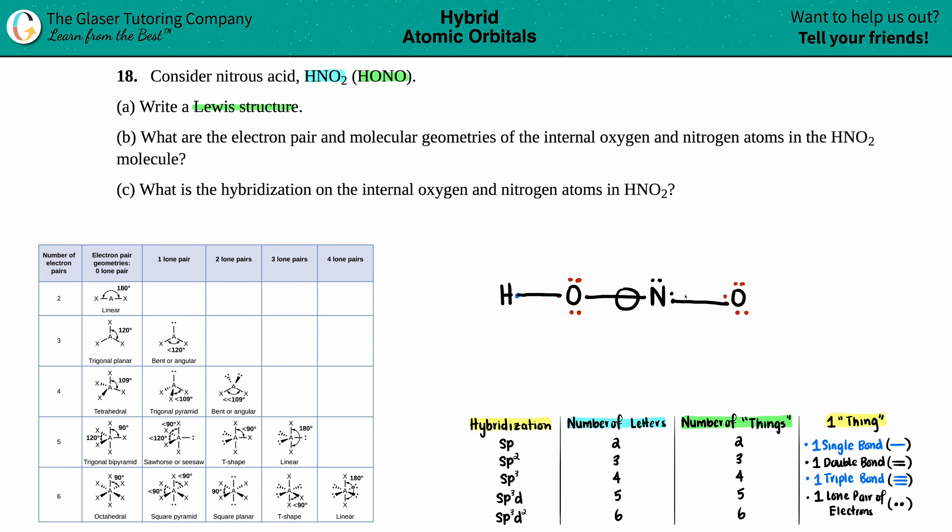This nitrogen has two, four, six, seven electrons, so it needs one more. And this oxygen has seven as well, two, four, six, seven. So I'm going to make that double bond.